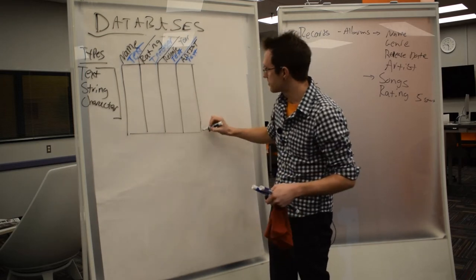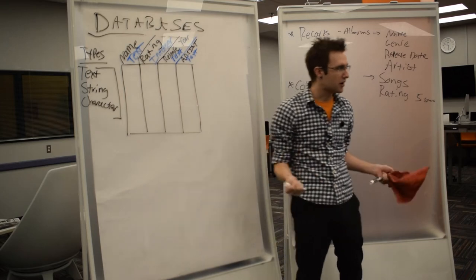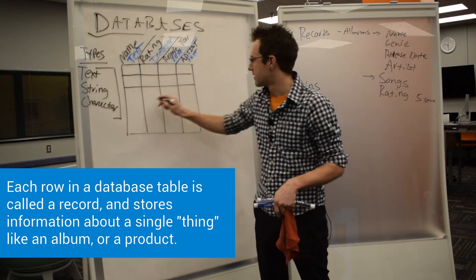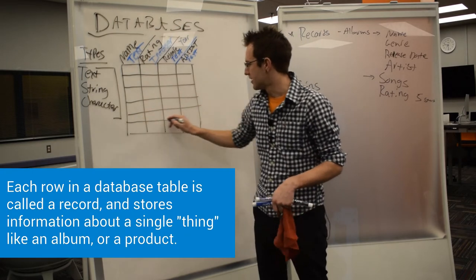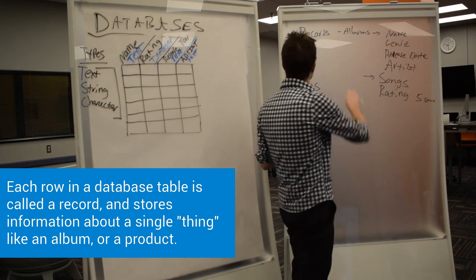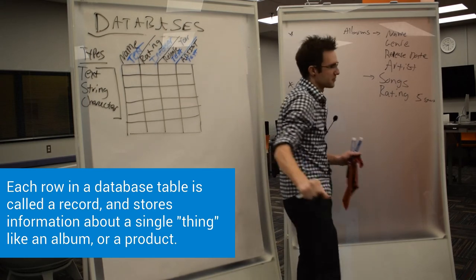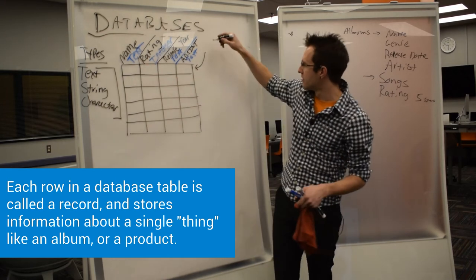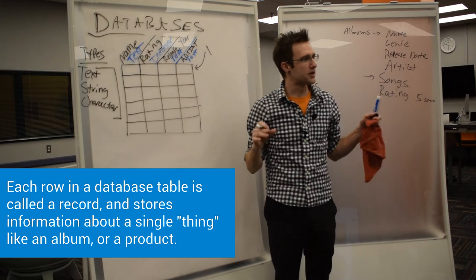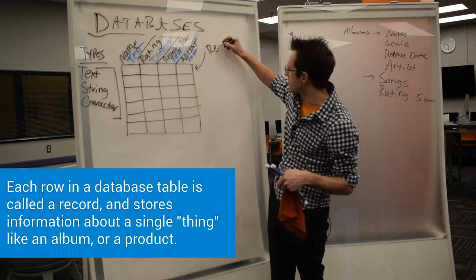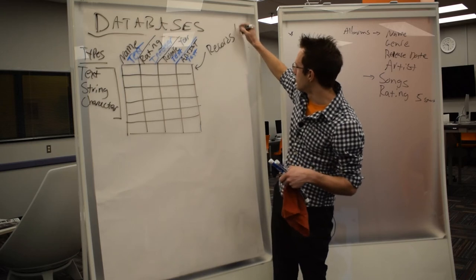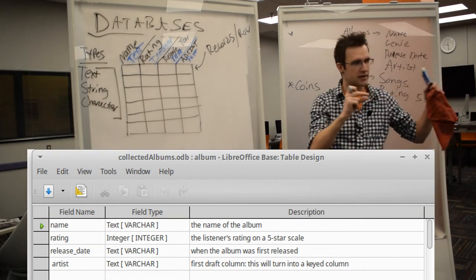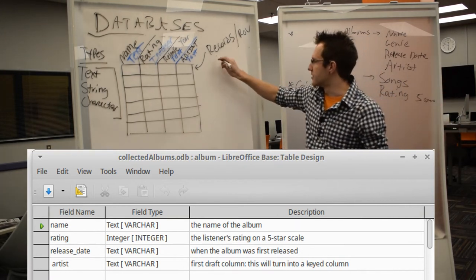So in a database, we start by building the table according to its columns. In databases, each row is called a record, and I really shouldn't have put records. We'll say albums, because we don't want to confuse terms. So each row corresponds with one instance of whatever you're storing in that table. So these are called records, more commonly just a row, but we treat them as a chunk of data. So I like to use the database term record.